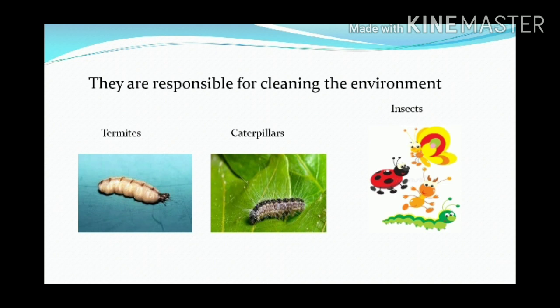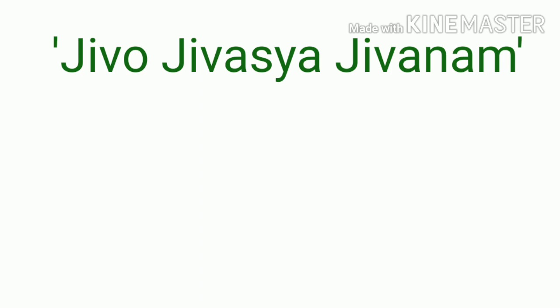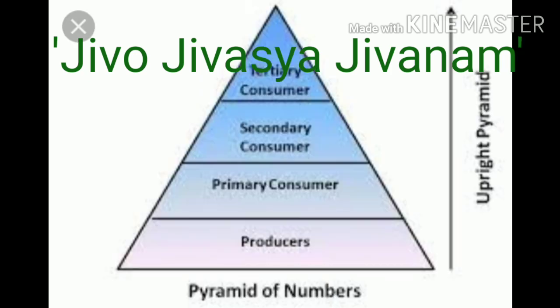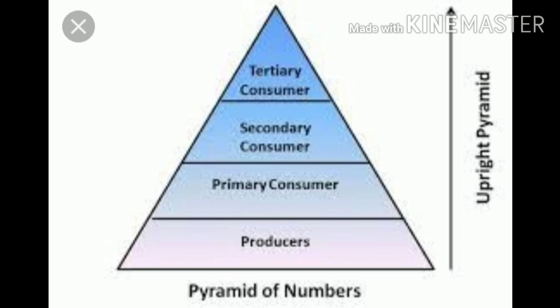The existence of human beings is dependent on a balanced ecosystem. There is a mantra: 'Jivo Jivas Jivanam,' a Sanskrit saying which means that one living organism makes the living of the others. Prey and predator interactions are based on this concept. There are different trophic levels in a food chain: producers at the first trophic level, primary consumers at the second, secondary consumers at the third, and tertiary consumers at the fourth trophic level.